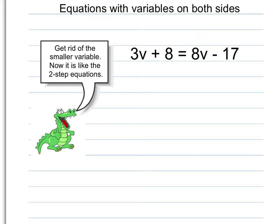When I look at this equation, I can see that there are variables on both sides. On the left side I have 3V, and on the right side I have 8V. Allie gives us a little clue about what we should do here. She says: get rid of the smaller variable, and then it's going to be like a two-step equation. So the smaller variable is 3V — there are fewer V's here.